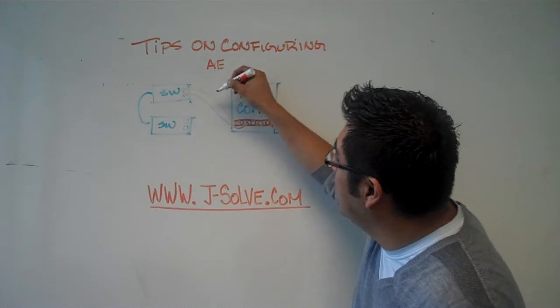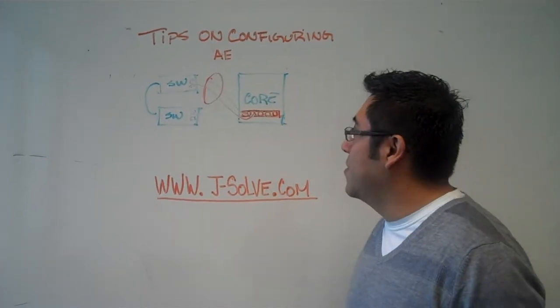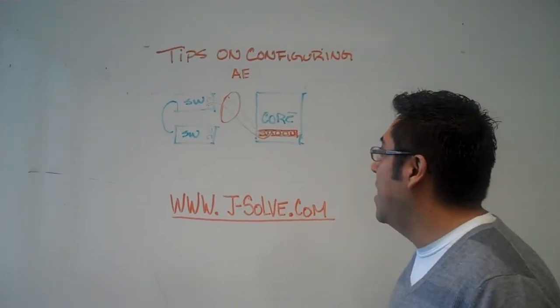So basically we are taking the speed of two ports and making it into one. So how do we do that?